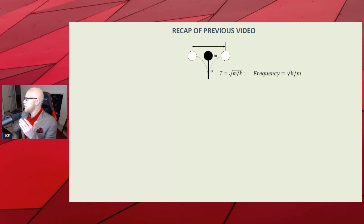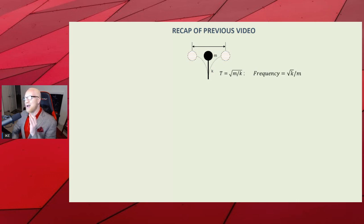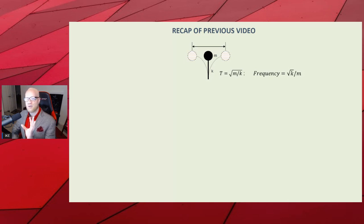This thing has a mass and a stiffness. The period — which is the time in seconds to go through one cycle, starting from the middle, going to the left, then going to the right — is equal to two pi times the square root of the mass divided by the stiffness.